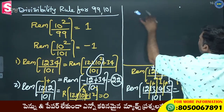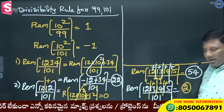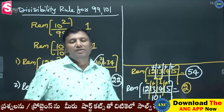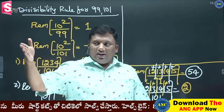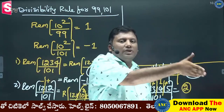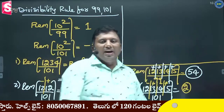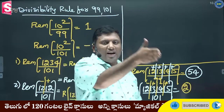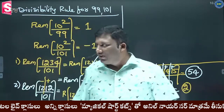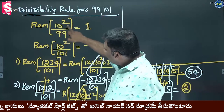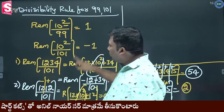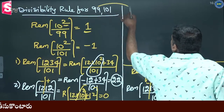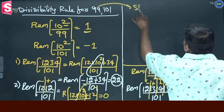Next slide. First rule: Divisibility rule for 99. Right-hand side, group of 2 digits. Divisibility rule for 99: start from the right-hand side, take groups of 2 digits.